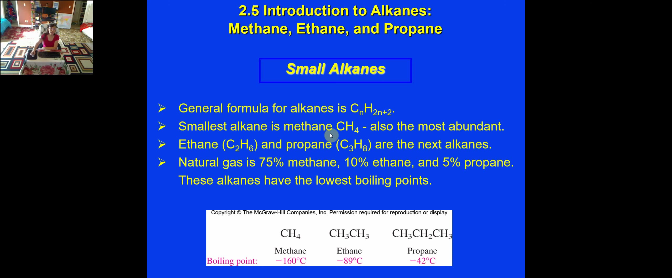The first one, methane, is the major component — approximately 75%. Ethane is about 10%, propane about 5%. These compounds normally exist as gases and have very low boiling points under ambient conditions.